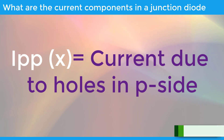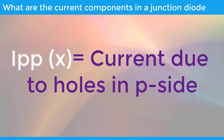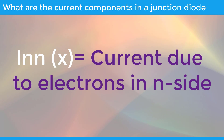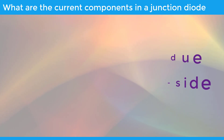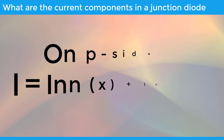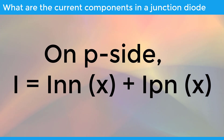This indicates that on the P side there exists one more current component, which is due to holes on the P side, which are the majority carriers. It is denoted by IPP(X), and the addition of the two currents on the P side equals the total current I. Similarly, on the N side there exists one more current component due to electrons on the N side, which are the majority carriers. It is denoted as INN(X), and the addition of two currents on the N side equals total current I. On P side: I = IPP(X) + INP(X). On N side: I = INN(X) + IPN(X).